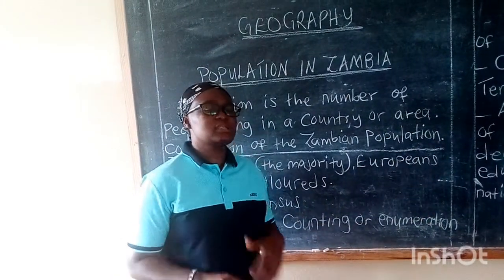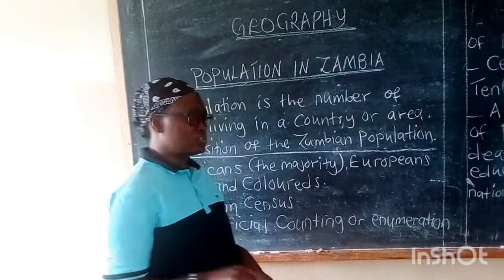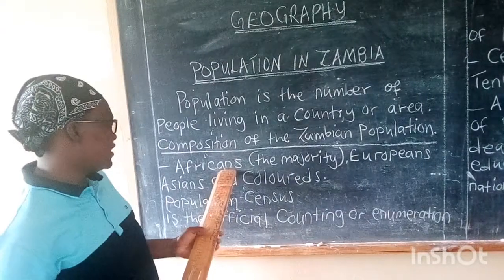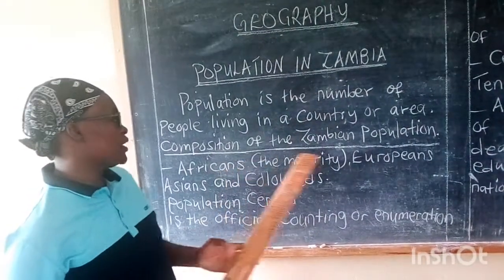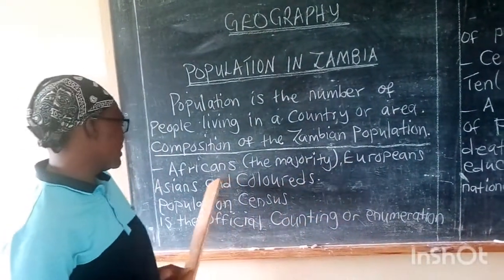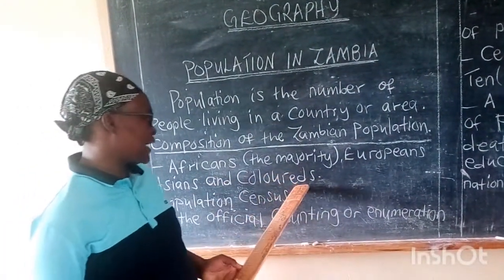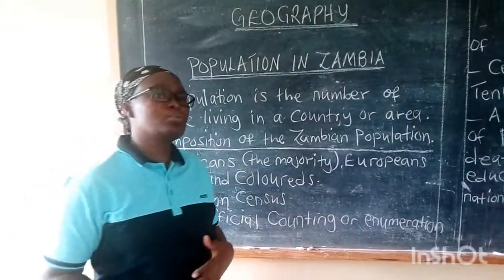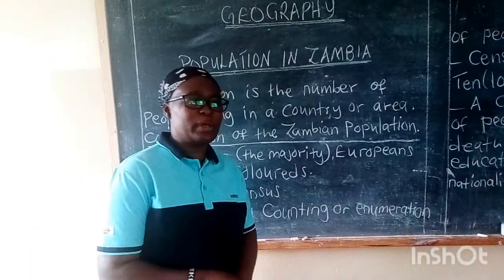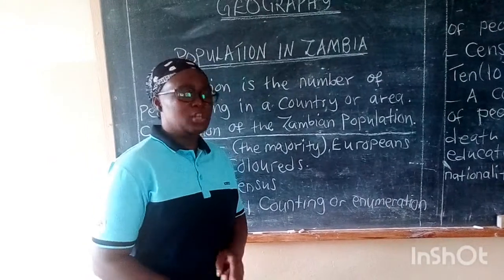So what is the Zambian population composed of? Mainly we have Africans, we have Europeans, we have Asians, and we have Kalas. Now, how do they count the people in a country or in an area?